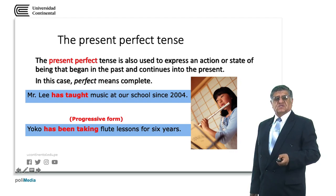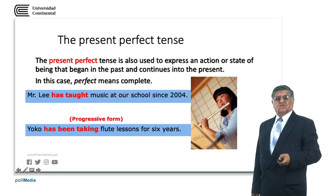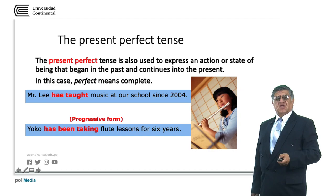Has is the auxiliary of the present perfect, being is the past participle form of to be, and taken is the progressive or gerund form of the verb take.